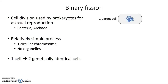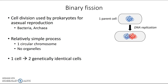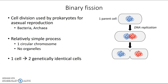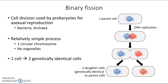Let's say we start with one parent cell — parent just means it's the one we start with. The first thing it has to do is copy its DNA, going through DNA replication to copy that one circular chromosome. The cell also starts to elongate and pull apart. As the process continues, a new prokaryotic cell wall will start to be built between those copied chromosomes as they pull apart, until they are completely separate. At that point we'd have two daughter cells that are genetically identical to the parent cell.